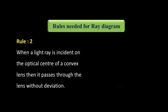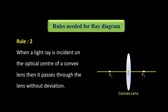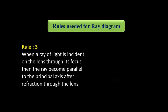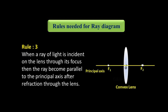Rule number two: when a light ray is incident on the optical center of the convex lens, then it passes through the lens without deviation — there is no change in the direction of the incident ray. Third rule: when a ray of light is incident on the lens through its focus F1, then the ray becomes parallel to the principal axis after refraction through the lens. So rule three is exactly opposite to rule one.